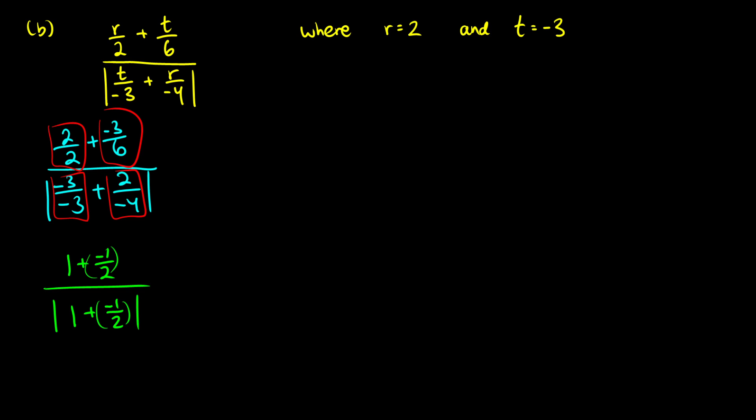Okay. So we have 1 plus negative 1 half divided by the absolute value of 1 plus negative 1 half. Okay. Let's just do addition now on the top and the bottom. So we're going to add 1 plus negative 1 half. We're going to add 1 plus negative 1 half. So the top and bottom are going to really be the same here. On the top we're going to have 1 half. And we're dividing that by the absolute value of 1 half.